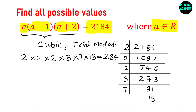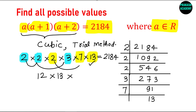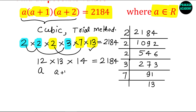We have the factor 13. Multiplying 7 and 2 gives 14 — so 13 and 14 are two consecutive numbers. Multiplying the remaining factors 3, 2, and 2 gives 12. So the three consecutive numbers are 12, 13, and 14. Indeed, 12 × 13 × 14 = 2184. This means A equals 12 is one solution, since A, A+1, A+2 correspond to 12, 13, 14.